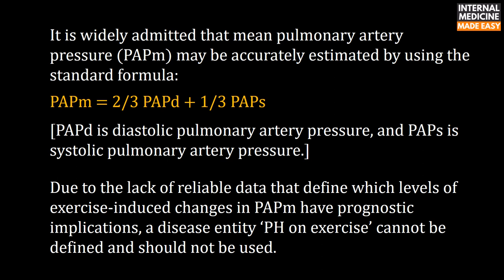Due to the lack of reliable data defining which levels of exercise-induced changes in mean pulmonary artery pressure have prognostic implications, a disease entity of pulmonary hypertension on exercise cannot be defined and should not be used.